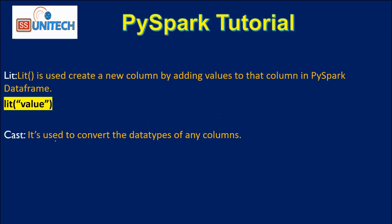Before we start with the columns, let's understand these two functions. The first function is the Lit function. The Lit function is used to create a new column by adding a value to that column in a PySpark data frame. For example, if we want to add a new column as company name with the value 'SS Unitech', we cannot pass that value directly — we have to use the Lit function. Lit function takes static values like 'SS Unitech' and passes that value to the column.